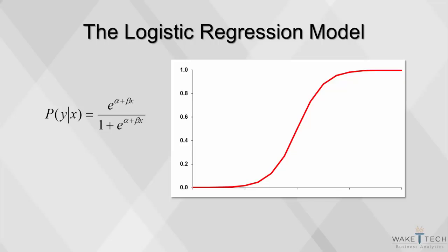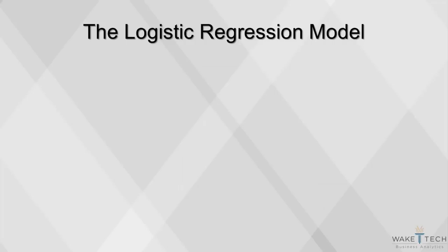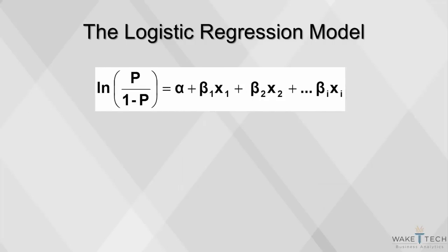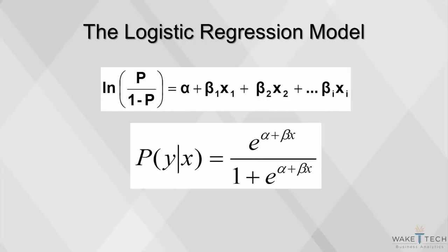Note that instead of modeling just 0s and 1s, we're modeling the probability of an event occurring. With the logistic regression model, instead of winning or losing, we build a model for log odds of winning or losing. It's a natural logarithm of the odds of the outcome.